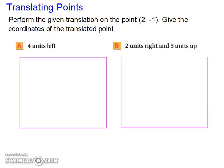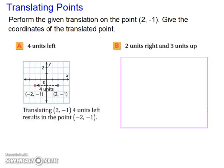Let's look at translating points. Perform the given translation on the point (2, -1). Give the coordinates of the translated point. So we're going 4 units left. We're going to take our x value and go 4 units left of that, which puts us at (-2, -1).